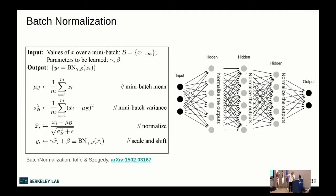To avoid overly restricting the network's capacity, batch normalization introduces learnable parameters gamma and beta that rescale and shift the normalized activations. These parameters are updated with gradient descent. In practice, batch normalization helps with vanishing gradients — by keeping distributions from narrowing across layers, gradients can flow further back. It also allows higher learning rates, leading to faster convergence, and makes networks less sensitive to initialization.